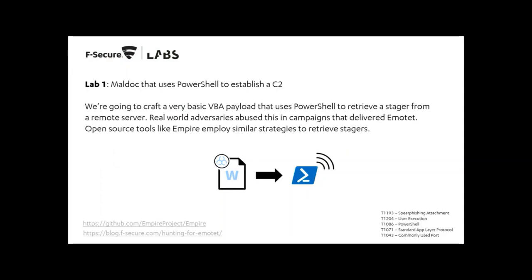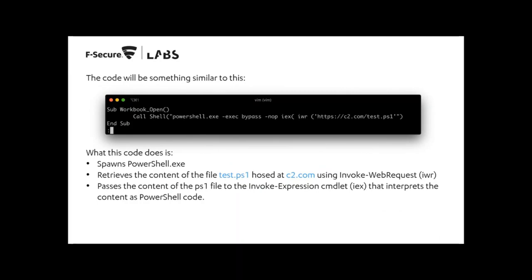Hi guys. In the first lab, what we're going to do is create a very basic VBA payload and embed it into an Excel spreadsheet. The VBA payload will execute a PowerShell one-liner that fetches a stager from our command and control server. This is a really simple example but despite its simplicity, it was actively used by real-world actors such as Emotet. For doing this, we're going to use the Covenant C2 framework.